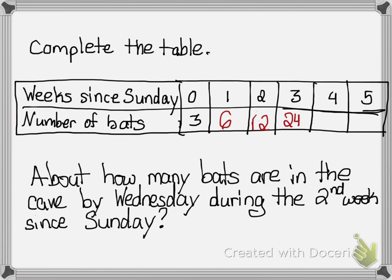24 times two is 48. 48 times two is 96. Just to explain the table — that means we start off with three, that's why there's a zero right there. One week after that Sunday we have six. The second week after that Sunday we have 12, etc.